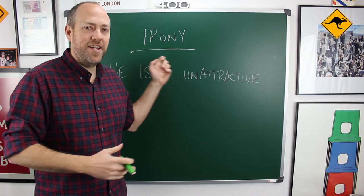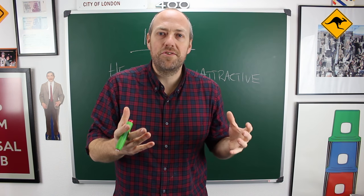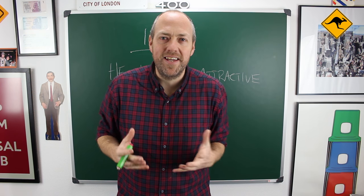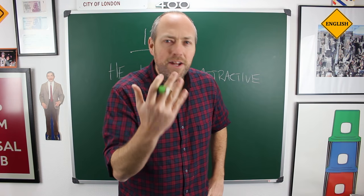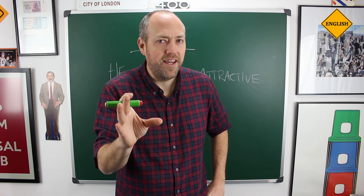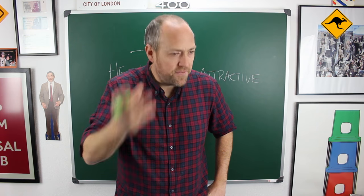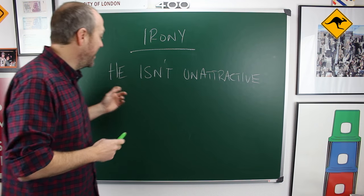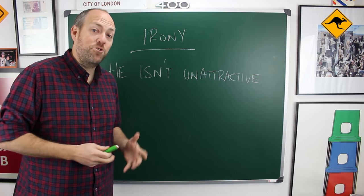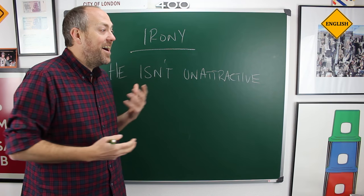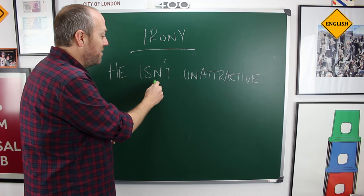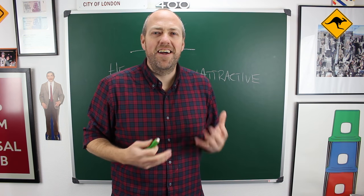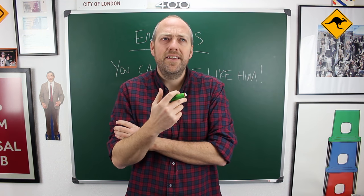The third reason is to create irony. Irony is the use of sarcasm to create humor, to be funny. So imagine we are talking about George Clooney — George Clooney is famous for being very attractive — but I could say 'he isn't unattractive,' and I'm using the double negative here to create ironic humor.